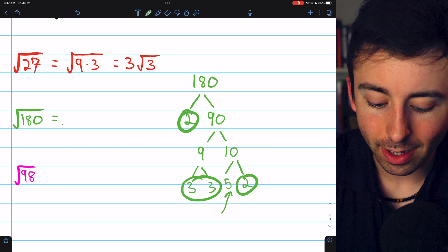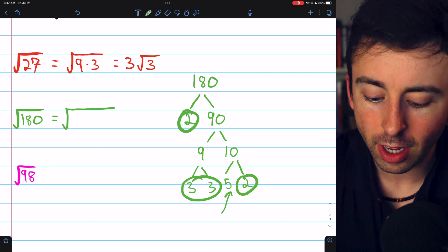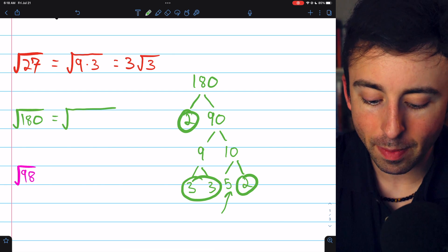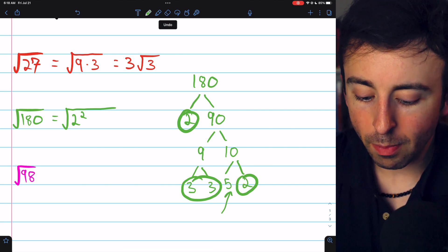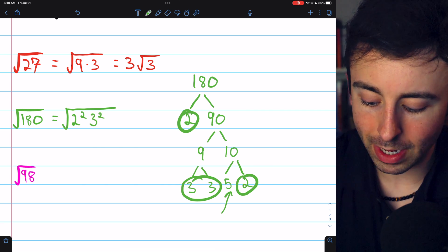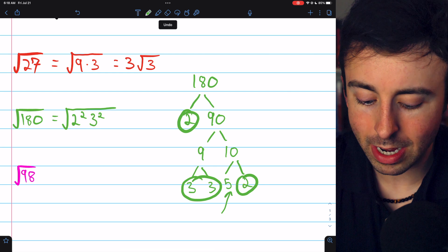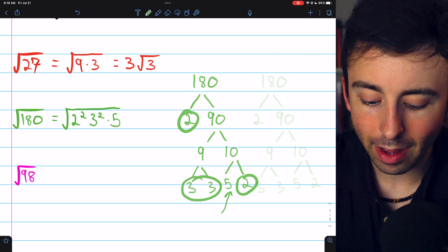Thus, 180, since we've seen the factorization, we know that it's the same as 2 squared, because we have these 2 factors of 2, multiplied by 3 squared, because we have these 2 factors of 3, multiplied by that factor of 5.